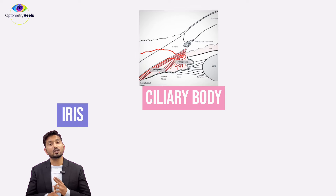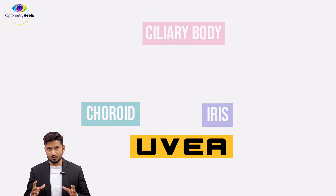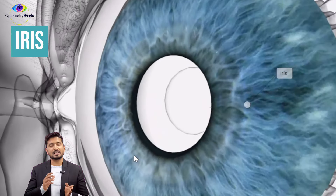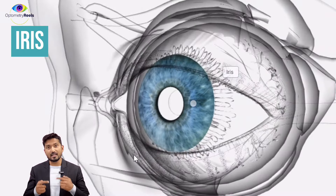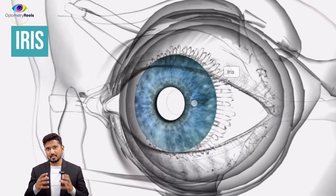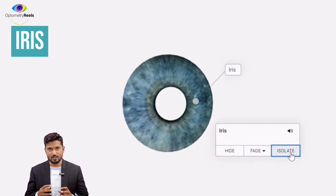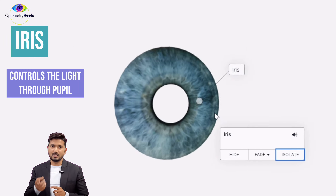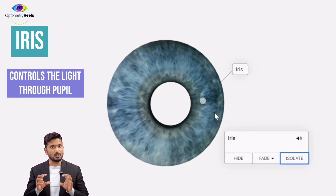Together, the iris, ciliary body, and choroid are known as the uvea of the eye, or uveal tissue. The iris is present between the cornea and the lens — it is the colored part of the eye, and its color and pattern are unique to every individual. The iris controls the amount of light entering the eye through the pupil, which is also known as the window.